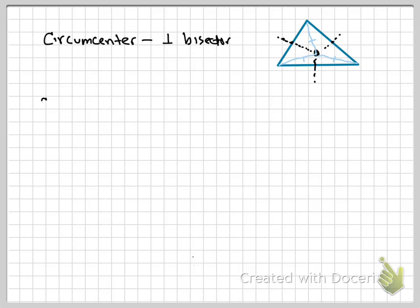All right, and then we have centroid. And what was centroid made up of? How did we find centroid? A median. What's a median? Vertex to opposite midpoint. So if this is a midpoint, it'd be from vertex to midpoint. If this was a midpoint, vertex to midpoint, vertex to midpoint.